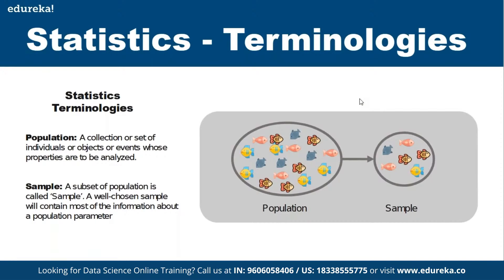Historically, to find the average family size in a country, people would go house to house collecting data — often teachers were appointed to do this. With data science, since data is available online or through APIs, you can query it directly. That's why data science is statistics plus technology.